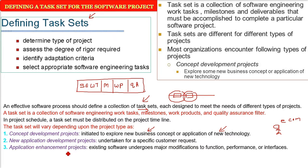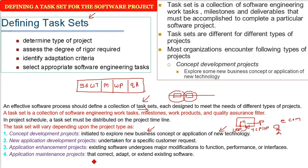Another type is application enhancement projects — where existing software undergoes major modifications in terms of function, performance, or interfaces, such as changing UDP to TCP/IP. Application maintenance projects involve correcting, adapting, or extending already existing software. Correction, adaptation, and extension all fall under maintenance projects.